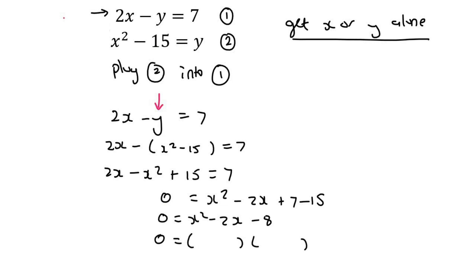Now this can factorize nicely as x minus 4 and x plus 2, and so therefore x is 4 or x is negative 2. But that's not the final answer, because the point of a simultaneous is to get x and y.